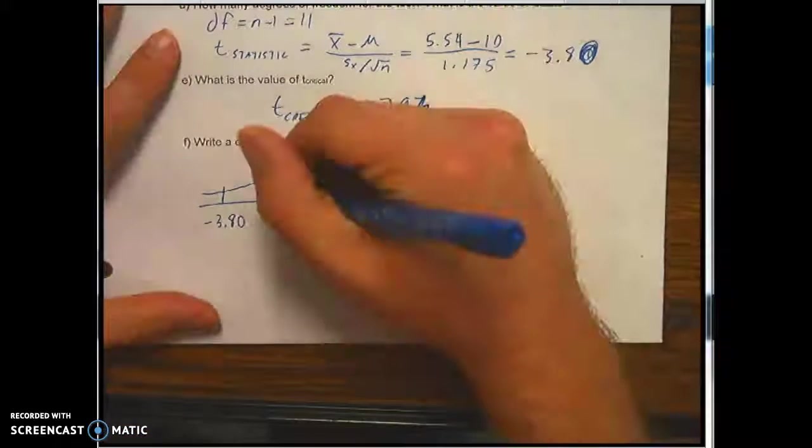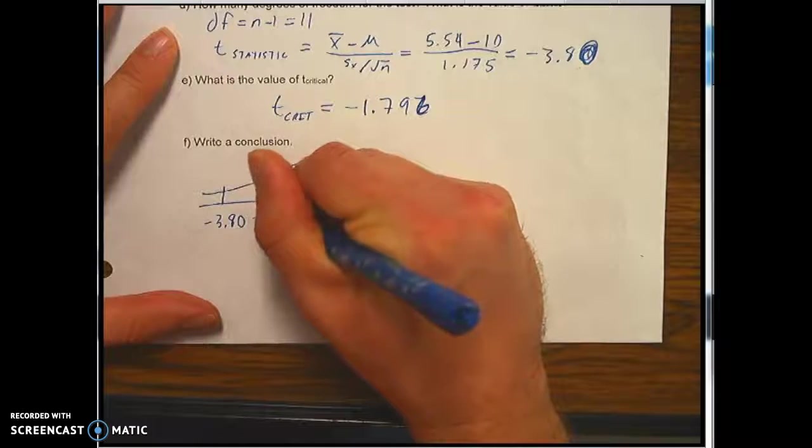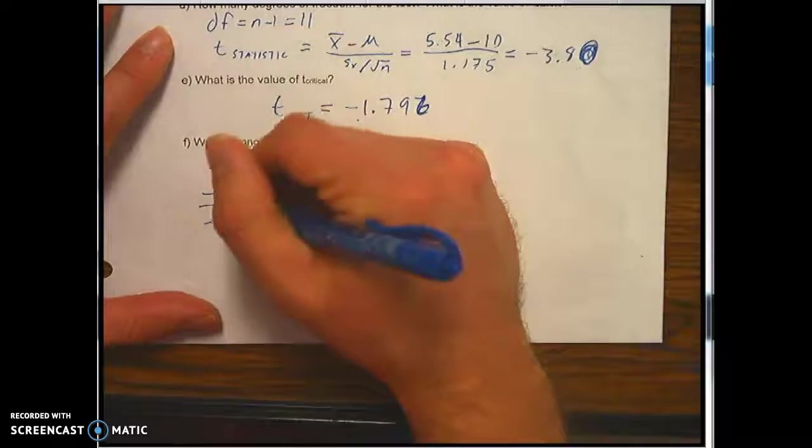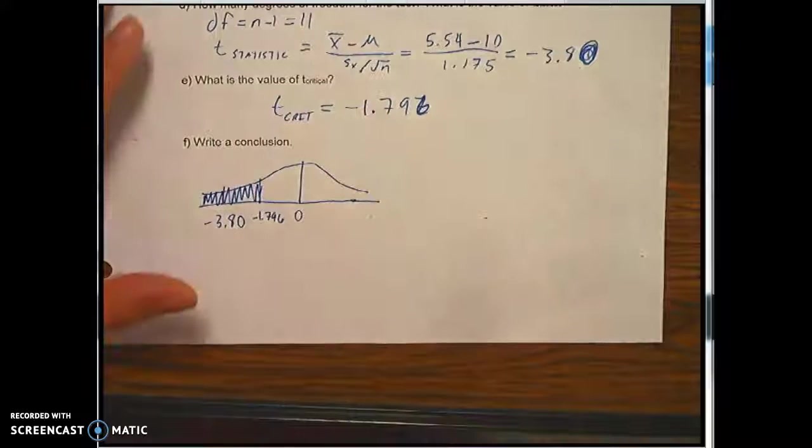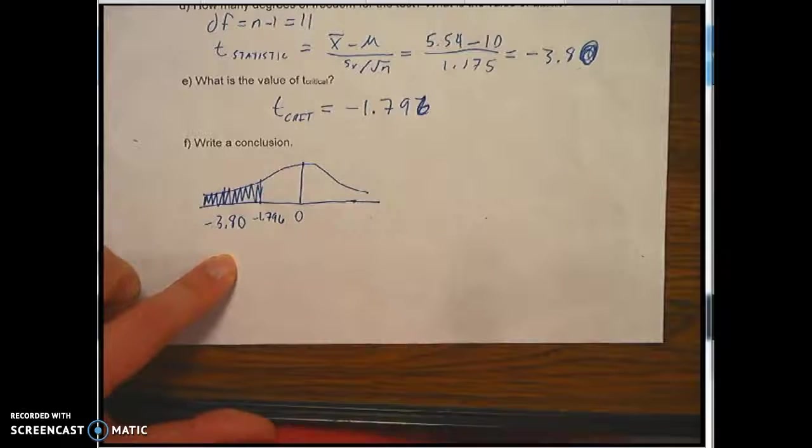Let's put that on the chart. It's right about there. Negative 1.796. What that means is everything to the left is in the critical region. Meaning our t statistic is in the critical region.